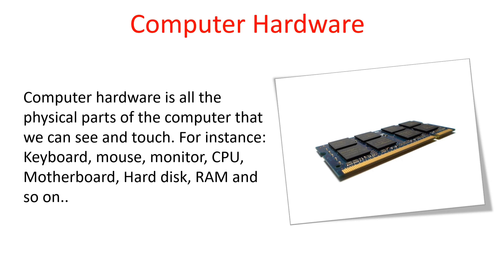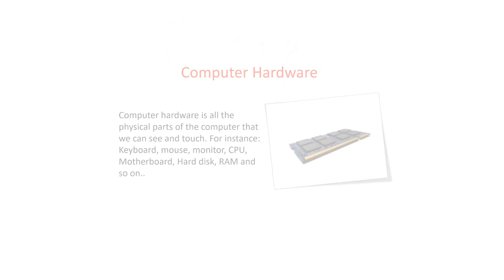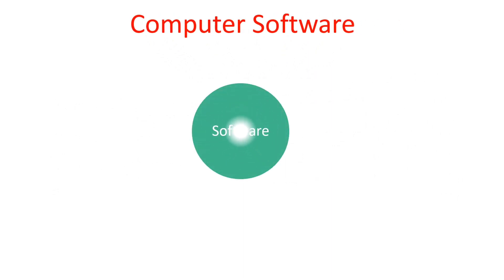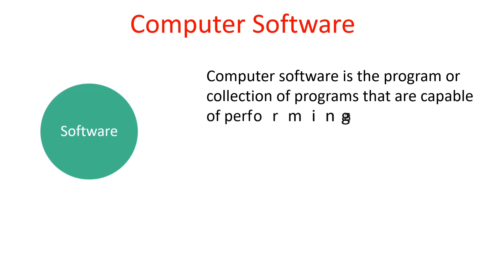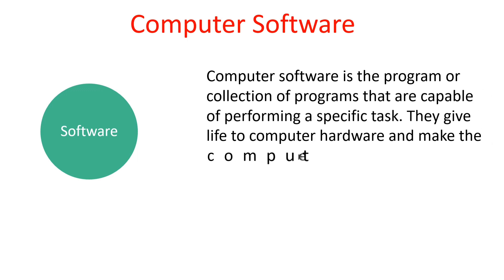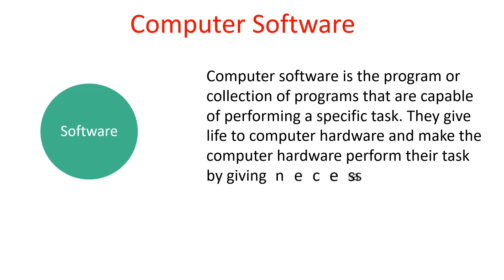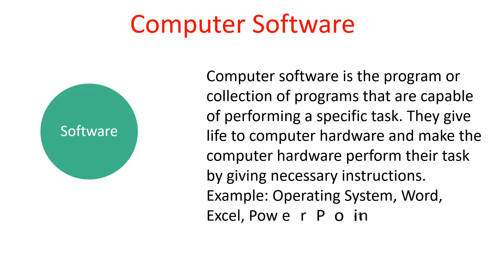Now let's see about computer software. Computer software is the program or collection of programs that are capable of performing a specific task. They are the logical part of our computer system that gives life to computer hardware and makes it perform tasks by giving the necessary instructions.